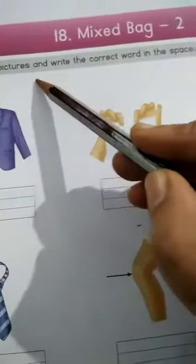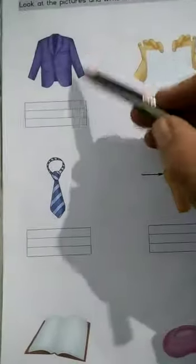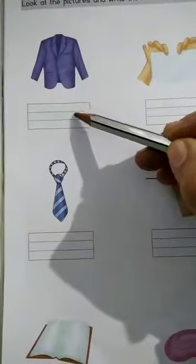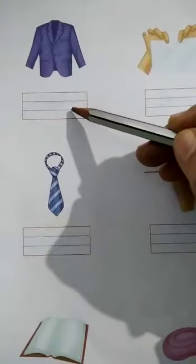Now take page number 26, topic number 18, Mixed Bag. Look at the pictures and write the correct word in the space given below. Pictures de le la hai aani te cha khali zo empty space ahi tite tenza correct word lehits ahi.